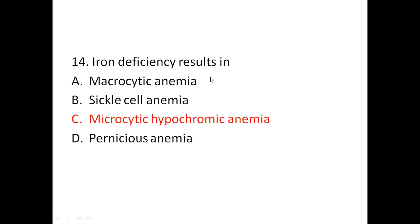Fourteenth question: iron deficiency results in? Options are macrocytic anemia, sickle cell anemia, microcytic hypochromic anemia, or pernicious anemia. The right answer is microcytic hypochromic anemia, a condition that impairs normal transport of iron in the cells. Pernicious anemia is due to vitamin B12 deficiency. Sickle cell anemia is an inherited disorder where red blood cells change shape and become sickle-shaped. Macrocytic anemia is a blood disorder where the bone marrow abnormally produces large red blood cells.